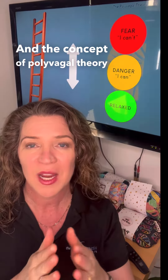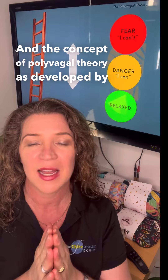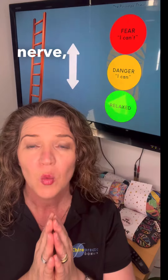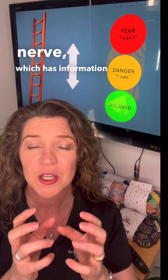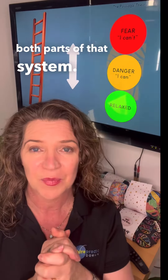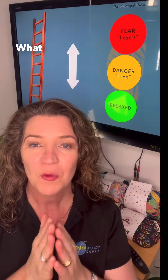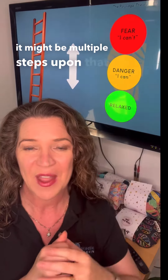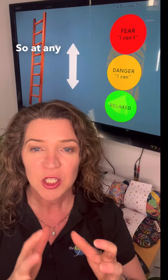The concept of polyvagal theory, as developed by Dr. Stephen Porges, talks about one of the cranial nerves — the tenth cranial nerve — which has information traveling from both parts of that system. What it recognizes is that we will be at one of three states; however, it's not clearly three steps — it might be multiple steps upon that ladder.